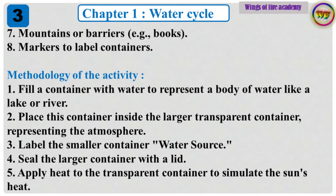Methodology: 1. Fill a container with water to represent a body of water like a lake or river. 2. Place this container inside the larger transparent container, representing the atmosphere. 3. Label the smaller container 'water source.' 4. Seal the larger container with a lid. 5. Apply heat to the transparent container to simulate the sun's heat.